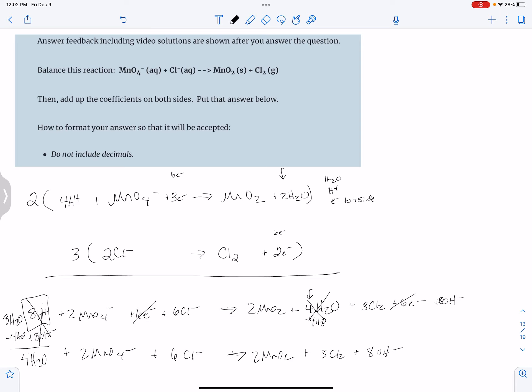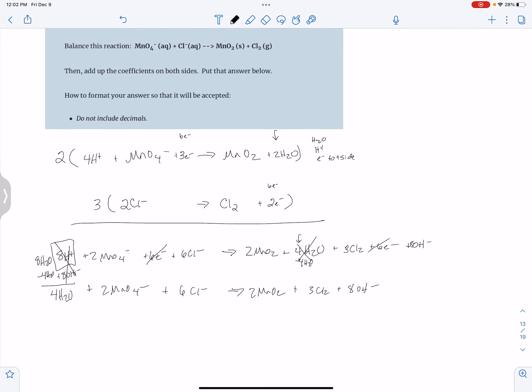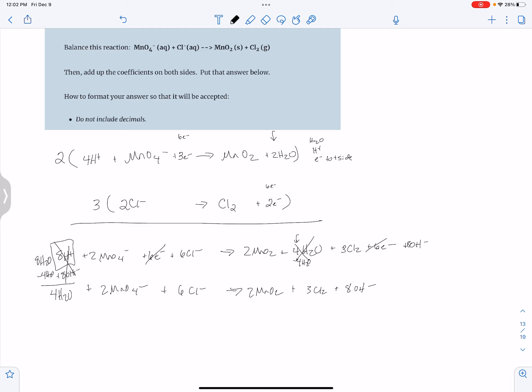Like in this one, sometimes it says both sides and sometimes it just says reactants. So if it was just reactants I've got 12 on the left, or if it's just products I've got 13 on the right. But since they want all of them, that gives me 25.